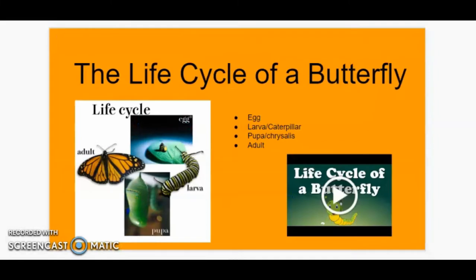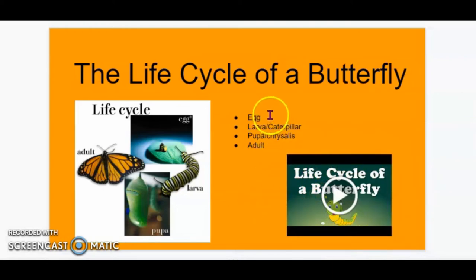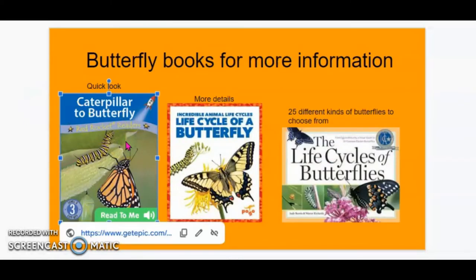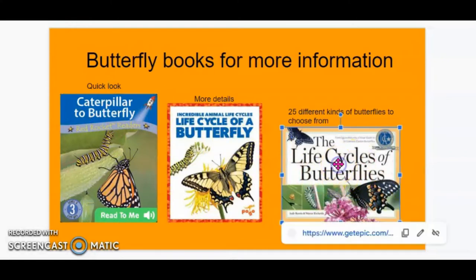First, students will be looking at a video of the life cycle of a butterfly — a quick four-minute animation that goes through the stages from egg to adult. Then we have three books linked to Epic Books where students can find more information on the life cycle of a butterfly. The last one includes different species of butterfly that will help students choose which one they want to present.